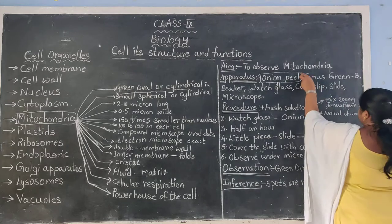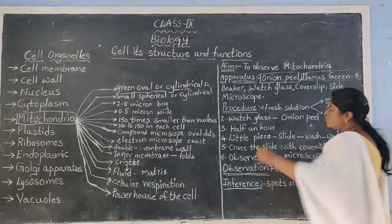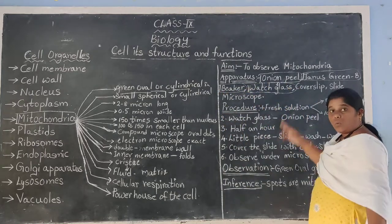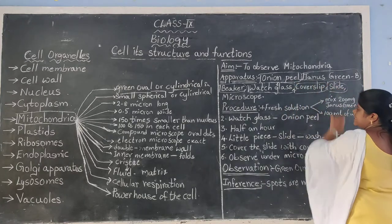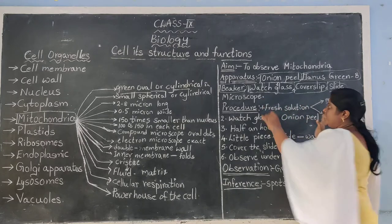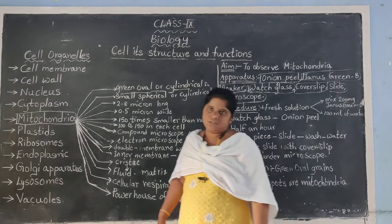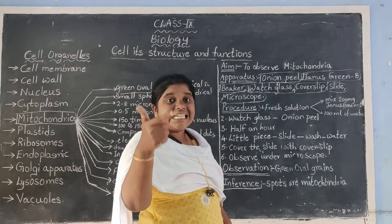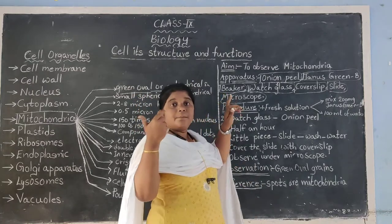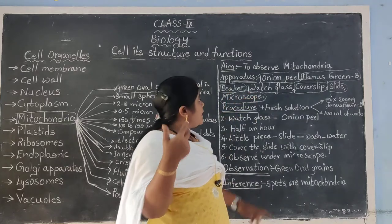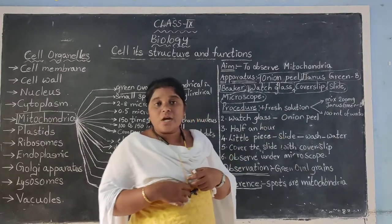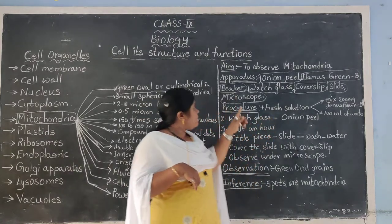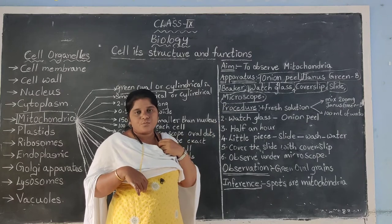The experimental material selected by us is onion peel. For this activity we need: Janus Green B — it is a powder — a beaker, a watch glass, a cover slip, a slide, and a microscope. We are going to observe the onion peel under high magnification.